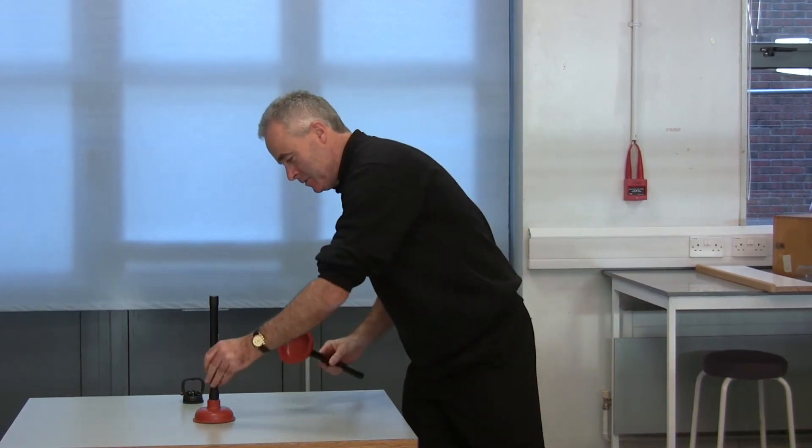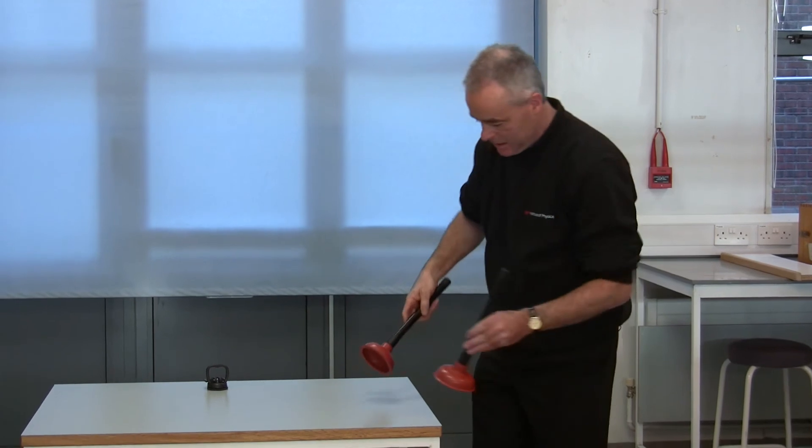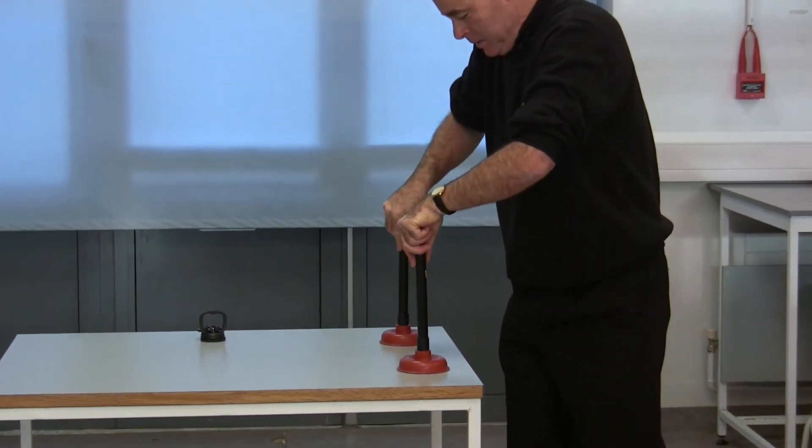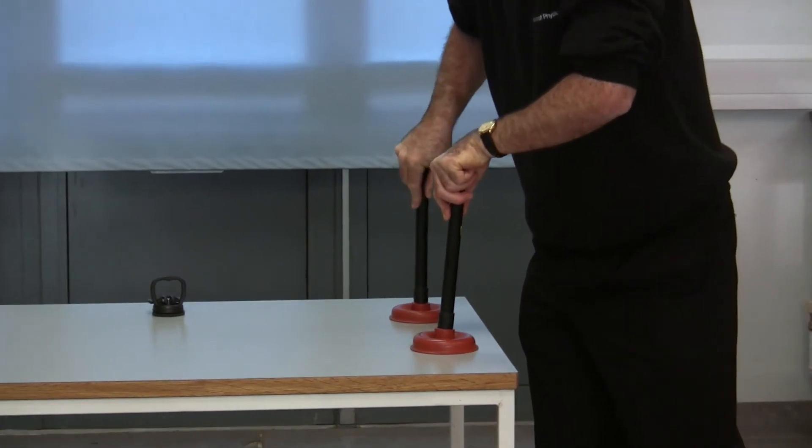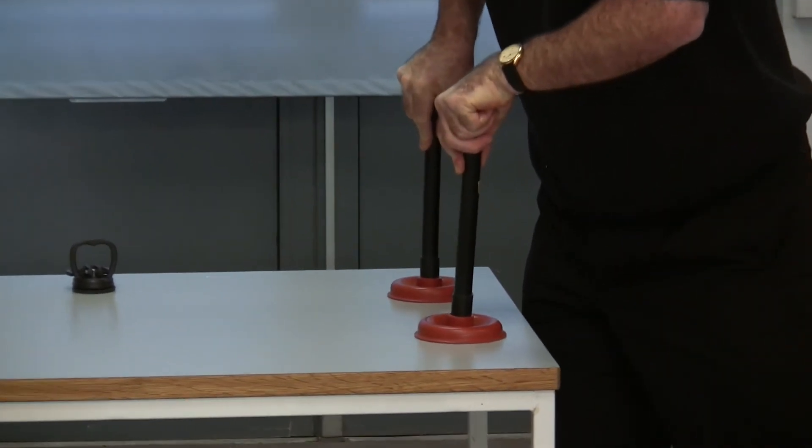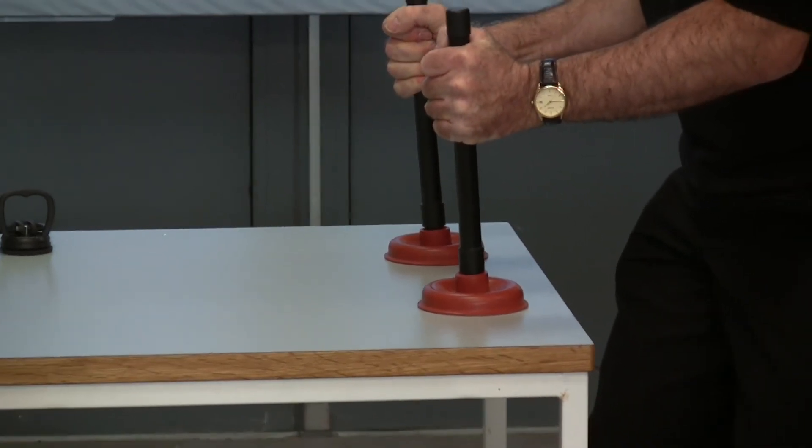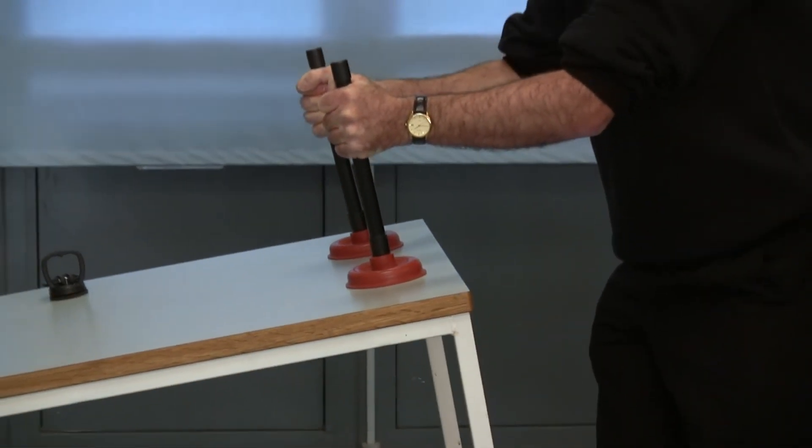We can see quite how strong the force is if I take the table here and by pressing downwards on these plungers force out the air, and then as I pull upwards, you can see it's strong enough to lift the table.